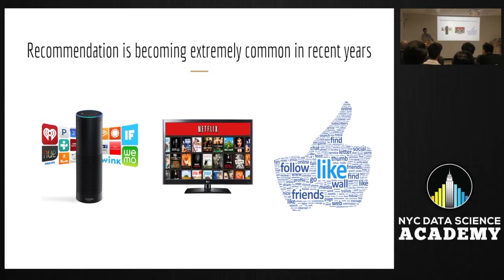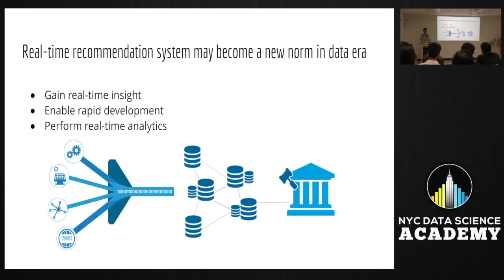Amazon Echo, Netflix movies — you don't want to spend your valuable time on lousy movies — and Facebook. Another very important reason is that real-time recommendation systems will potentially become a norm, because we have a shared amount of data we need to process.